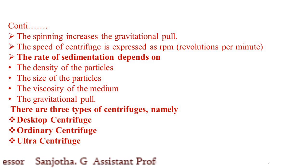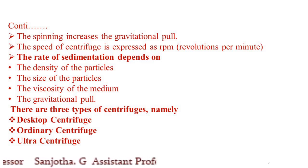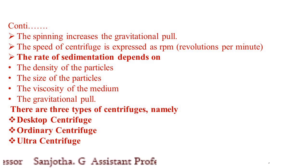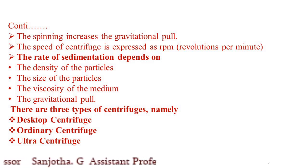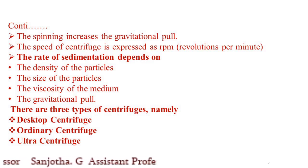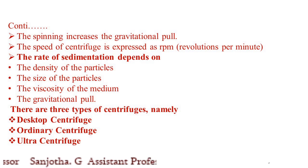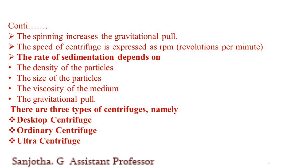There are three types of centrifuge machines: the desktop centrifuge, the ordinary centrifuge, and the ultracentrifuge. The desktop centrifuge is fixed on the working table, operated manually, and has a speed of 5,000 RPM. The ordinary centrifuge is a low-speed centrifuge with a speed of about 30,000 RPM. The ultracentrifuge is used for high-speed purposes, with a speed of 60,000 RPM, and it works in a vacuum.